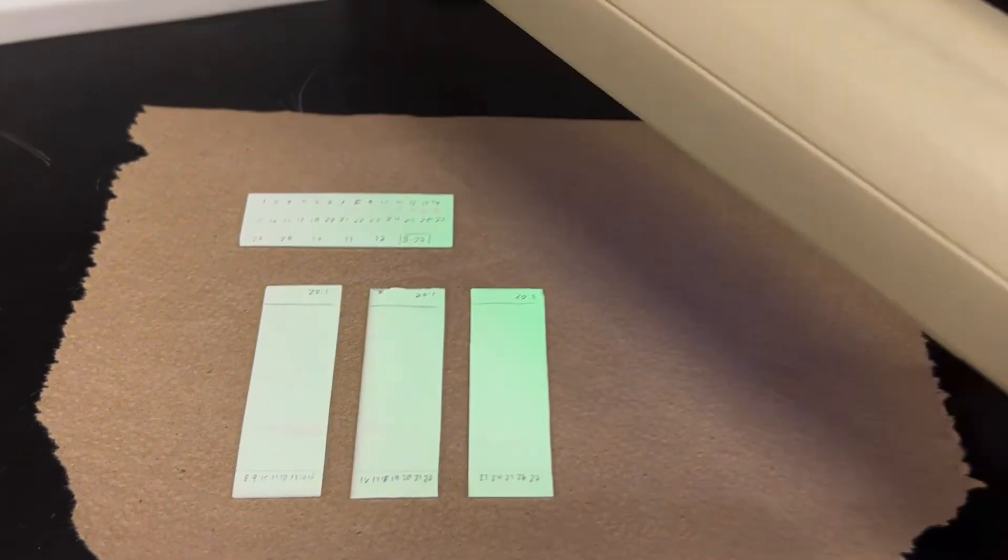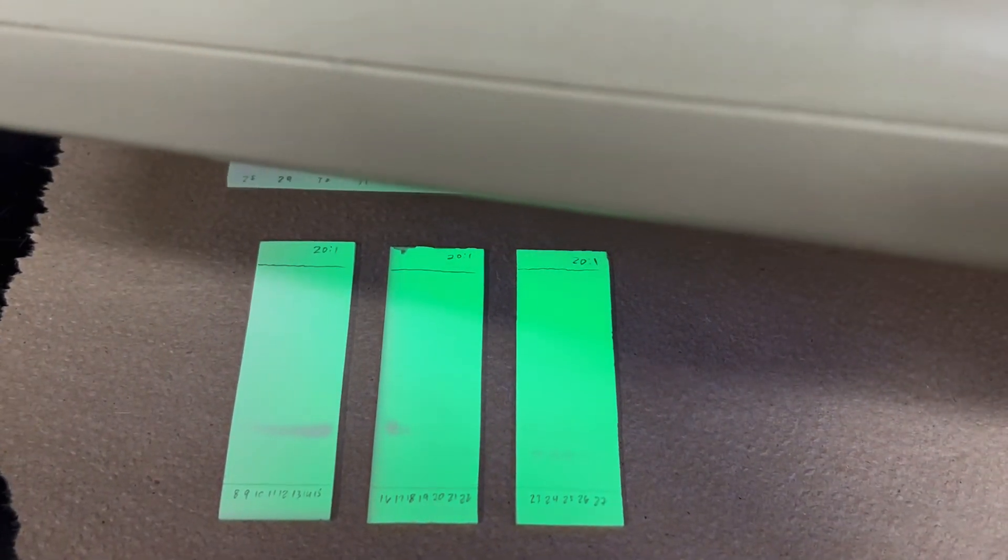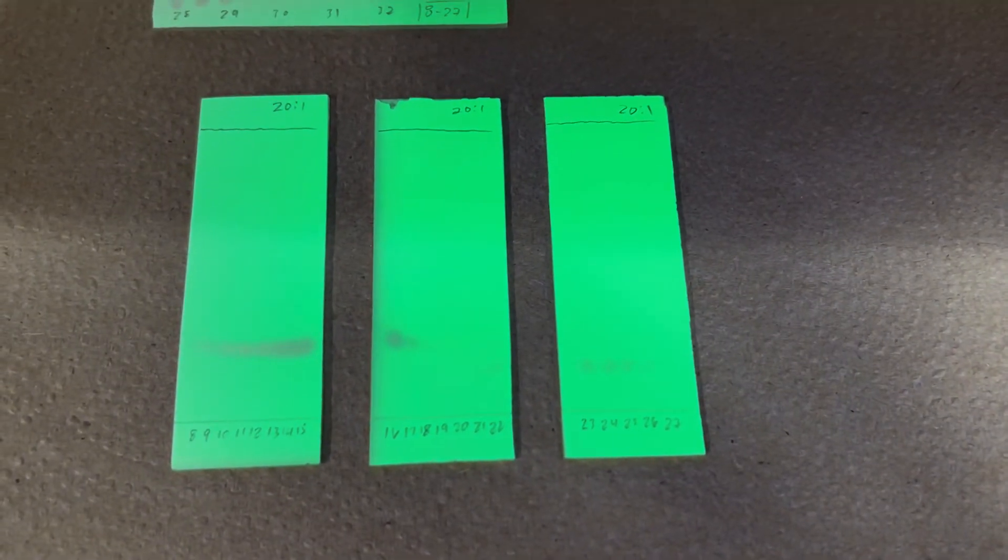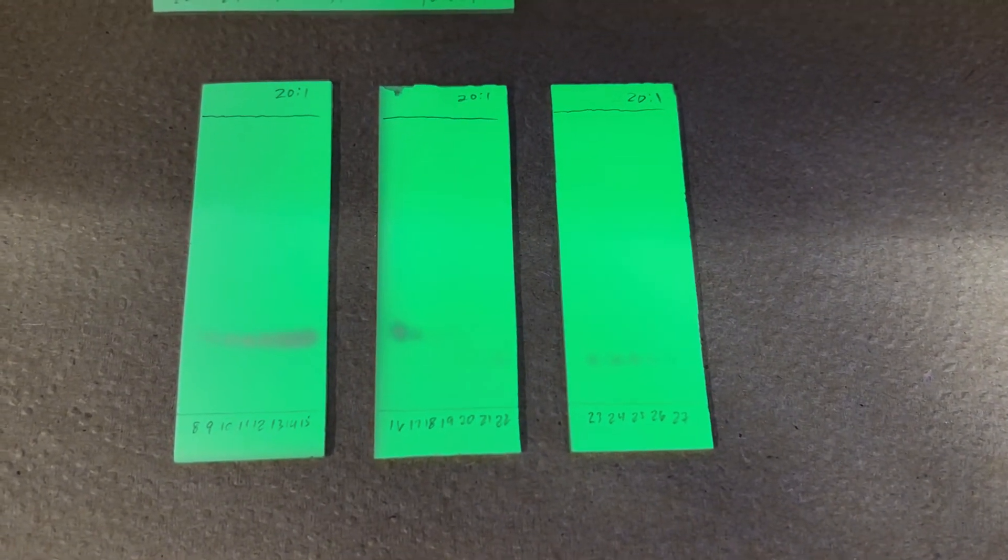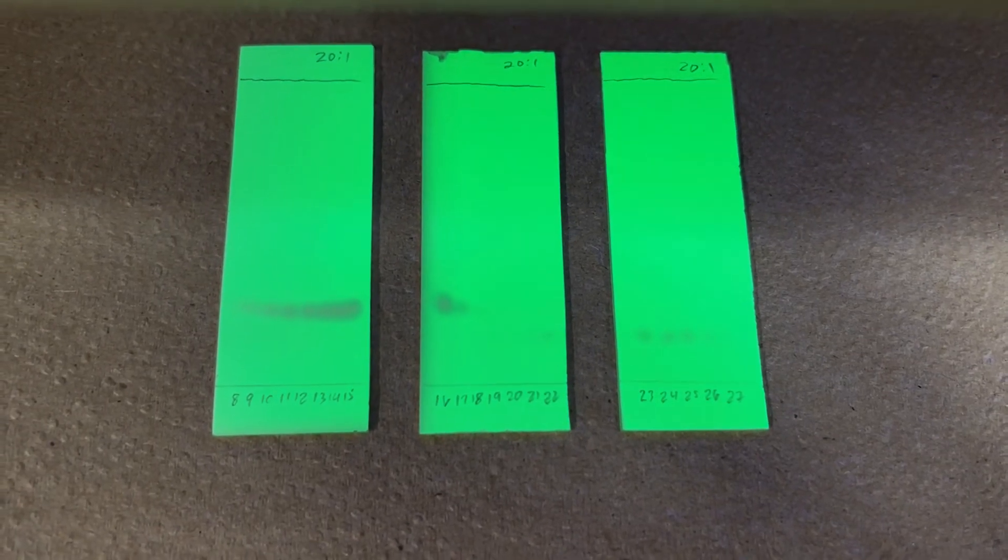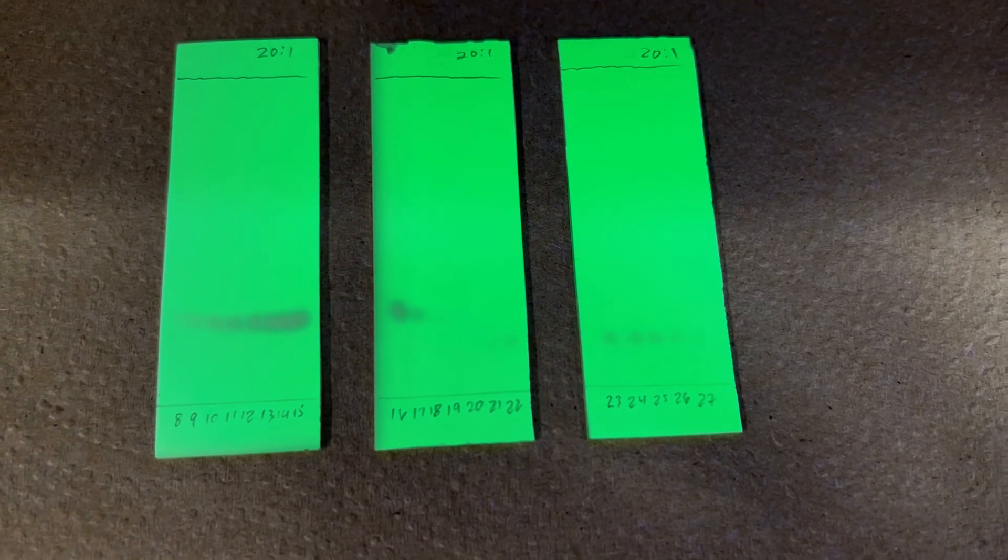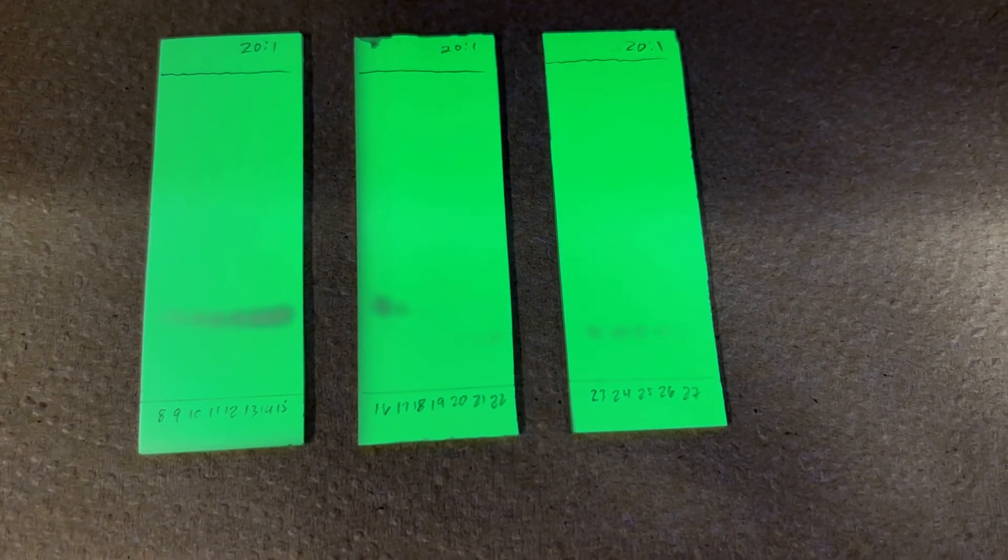And finally, let's look at the results under the UV lamp. So I ran a TLC of fractions eight through 27, and it looks like I have a higher RF compound, roughly an RF of 0.3, showing up in fractions eight through 17 or 18. And then it fades, and then I have a lower RF compound that's showing up in fractions 21 through 27 or so.